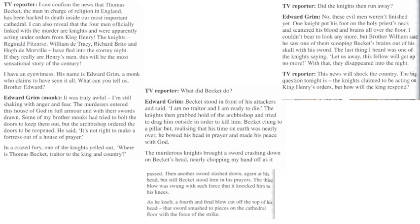In a crazy fury, one of the knights yelled out, where is Thomas Beckett, traitor to the king and country? Beckett stood in front of his attackers and said, I am no traitor and I am ready to die. The knights then grabbed hold of the archbishop and tried to drag him outside in order to kill him. Beckett clung to a pillar, realising that his time on earth was nearly over. He bowed his head in prayer and made his peace with God.